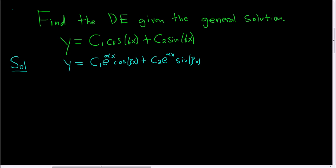And we can see from this that here we really have an e to the 0x. Likewise, here we have an e to the 0x. So in our case, alpha is equal to 0 and beta is equal to 6.